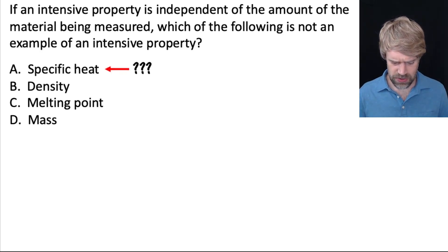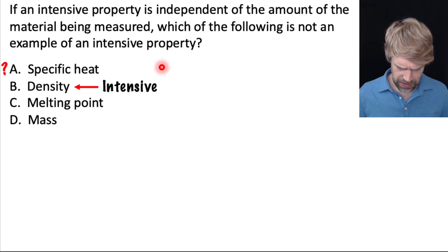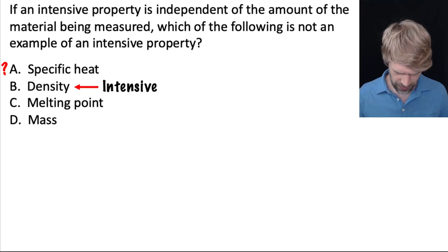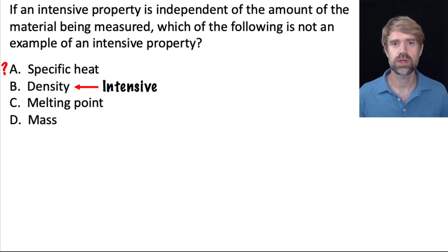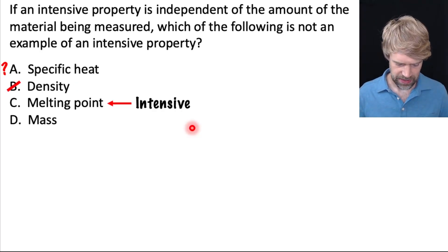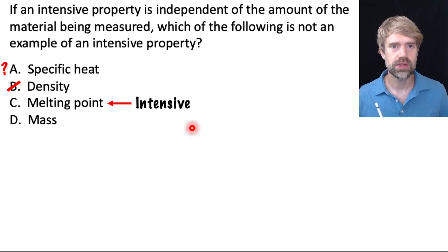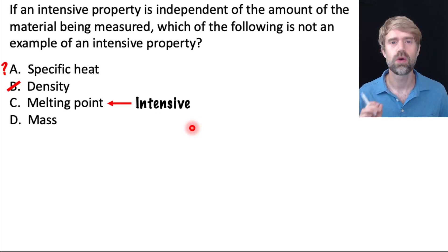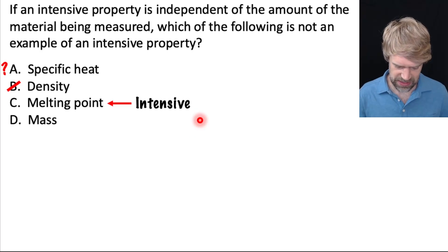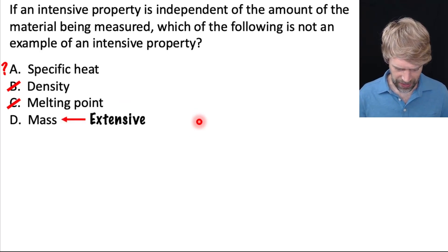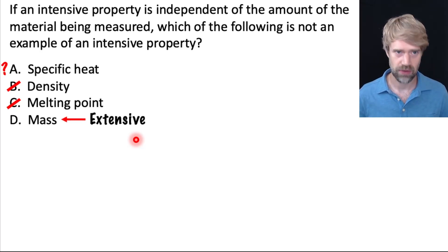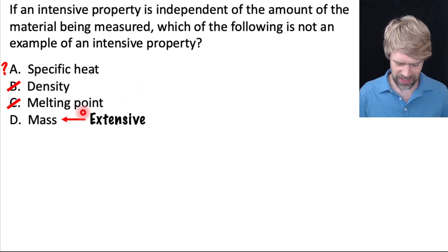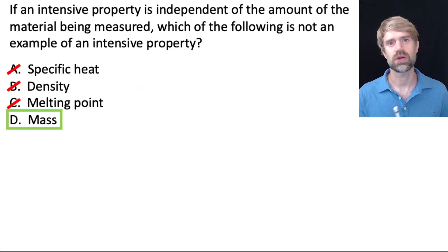Let's look at the choices. Choice A is specific heat — let's say you have no idea what that is, put a question mark and come back. Choice B is density — we said density is a very common intensive property, so cross it off. Choice C is melting point — all phase change points are intensive properties; water always melts at the same temperature no matter how much you have, so cross it off. Choice D is mass — how much something weighs definitely depends on the amount of stuff you have. Extra stuff makes the mass go up, so that's extensive. Mass is our correct answer — D.